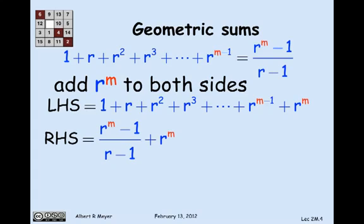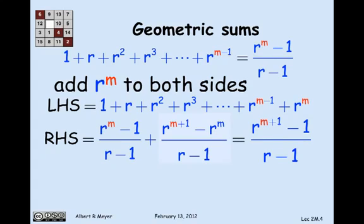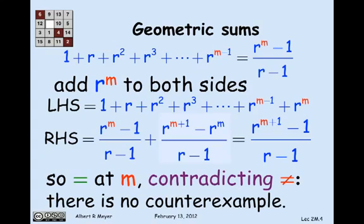Well, let's just simplify a little bit. Let's put r to the m, put it over the denominator r minus 1, which I do by multiplying it by r minus 1. And then it comes out to be r to the m plus 1 minus r to the m over r minus 1. And I collect terms. And look what I got. I've got the formula r to the m plus 1 minus 1 over r minus 1, which means that the identity that I was originally claiming, in fact, holds at m, contradicting the assertion that it didn't hold at m.